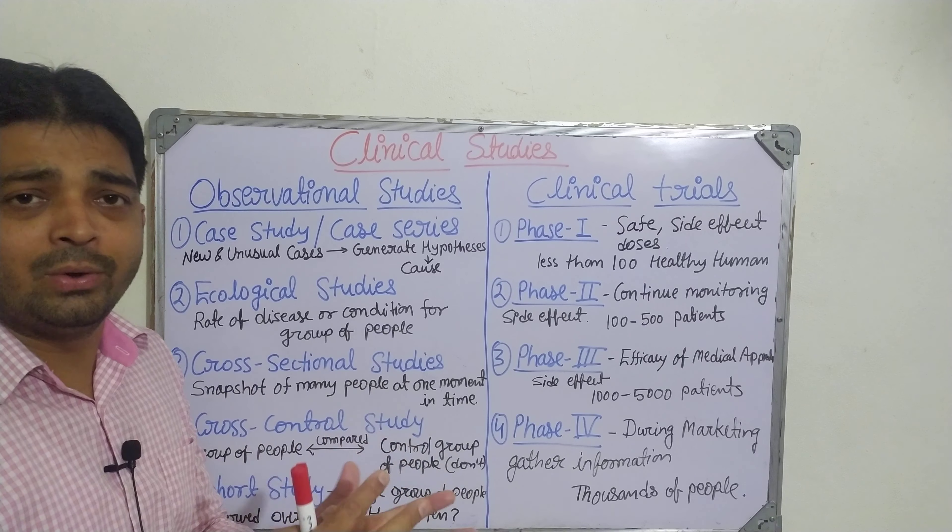Let us understand observational studies. The first type is case study or case series. Under this, new and unusual cases are selected and we generate hypotheses about the cause of disease. We observe without doing any trial. For example, during COVID-19, when the first variant came in Wuhan, we observed what kind of things were going on, how it may have been caused, and where it came from.